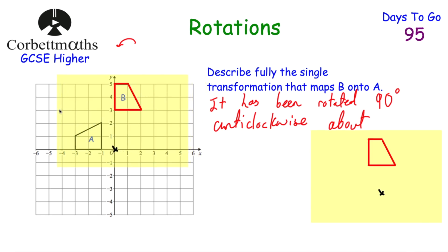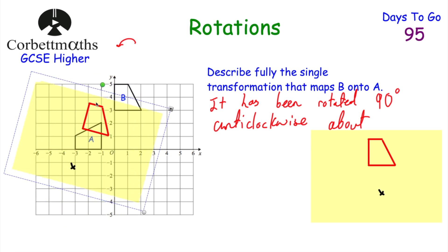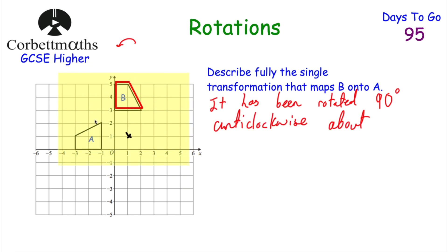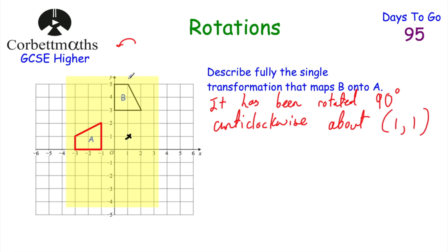I'd get a piece of tracing paper. I might think — is it the origin? Let's rotate 90 degrees anti-clockwise... it lands over there, so it's not the origin. Then try another point. You get quite good at spotting it — I can see it's going to be at point 1, 1. I'd rotate 90 degrees anti-clockwise and as you can see, it now lands on top of A. So 1, 1 is the centre of rotation — 90 degrees anti-clockwise about the point 1, 1. There's another approach using perpendicular bisectors of corresponding points, but for GCSE level, inspection is probably the best approach — it's quick and easy, and the grid may not give enough room for perpendicular bisectors. I'd recommend trial and error to find the centre of rotation.